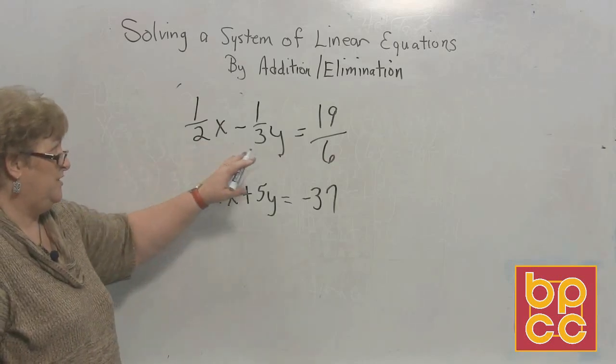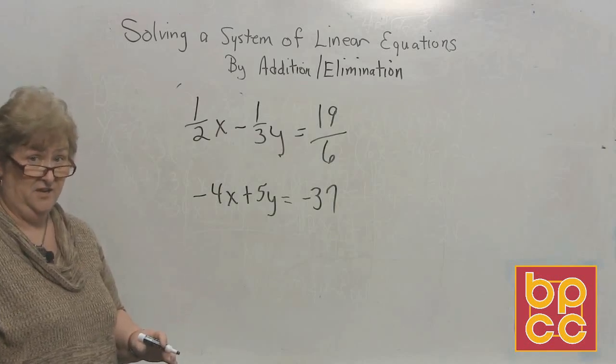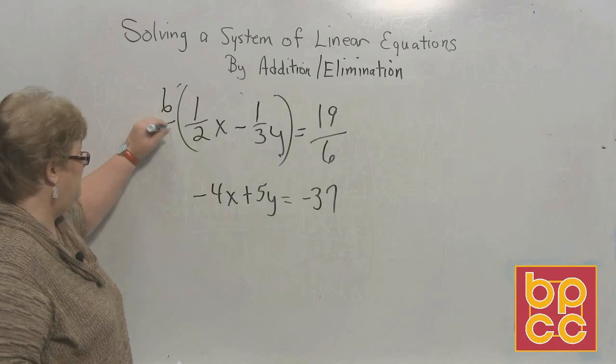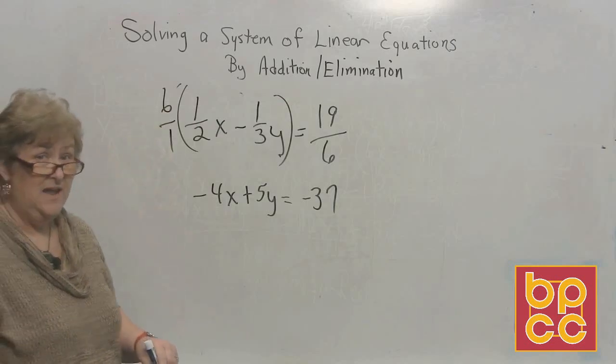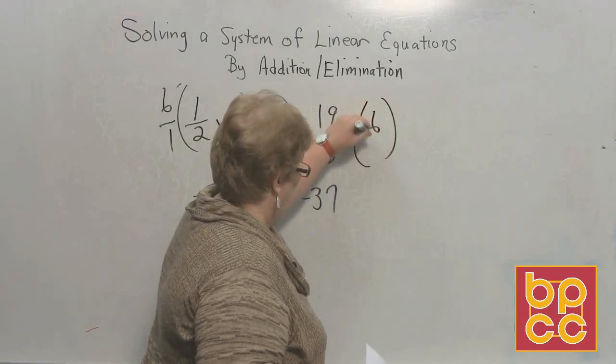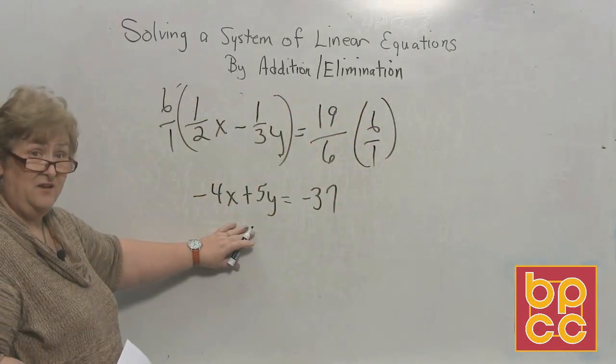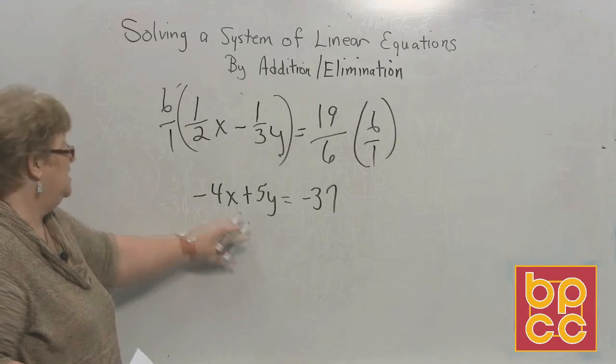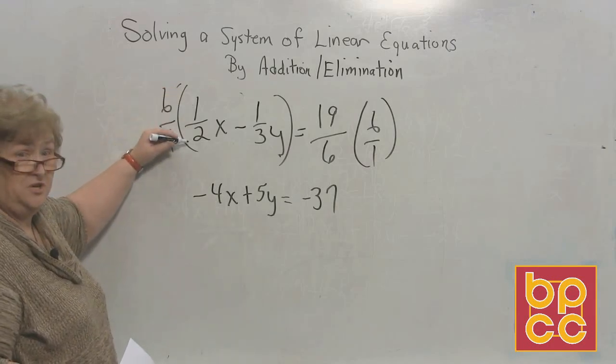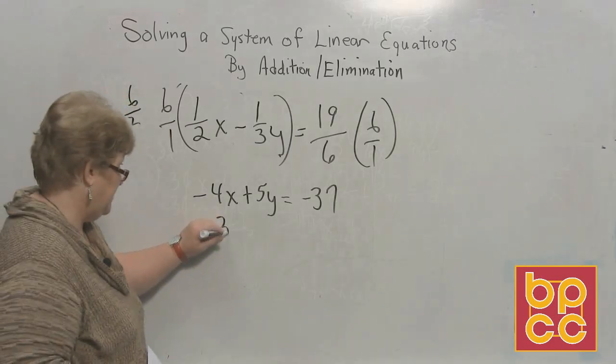Now I can't do anything until I get these into whole numbers. So I have a 2, a 3, and a 6. The common denominator for those is a 6. So I'm going to multiply both sides by 6 over 1, and everything's going to turn into a whole number. And whatever it turns into, I'm going to put it right down here, then we're going to start solving the equation. 6 times 1 is 6, 1 times 2 is 2. 6 over 2 is 3x, so I'll put my 3x right here.